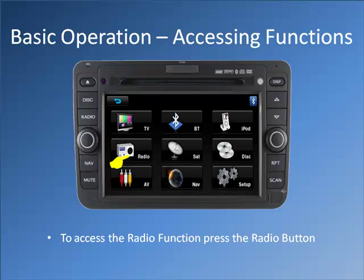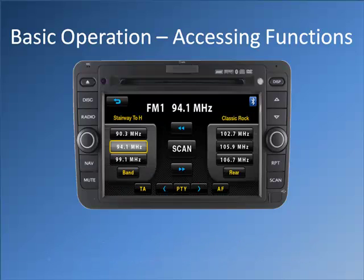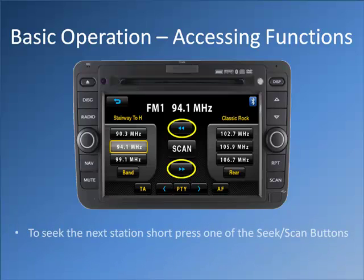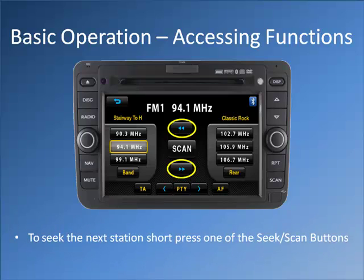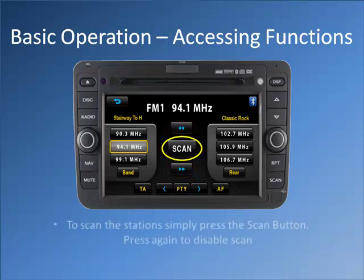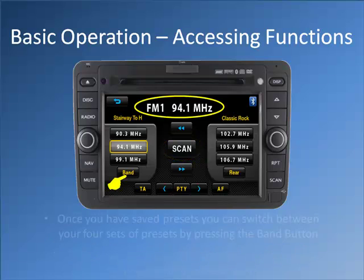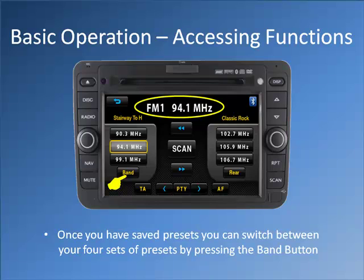To access the radio function, press the radio button. You can use the seek or scan buttons to find a specific station. To seek the next station, short press one of the seek or scan buttons. To scan the stations, simply press the scan button. Press again to disable scan. Once you have saved presets, you can switch between your four sets of presets by pressing the band button.